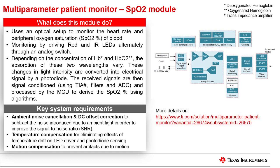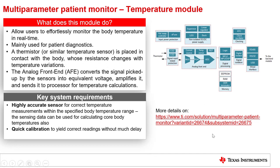A common block diagram for such SpO2 modules is shown in this slide. The third module is the temperature module. This module allows users to effortlessly monitor the body temperature in real time. It is mainly used for patient diagnostics. A thermistor, or similar temperature sensor, is placed in contact with the body, whose resistance changes with temperature variations. The analog front end, or AFE, converts the signal picked up by the sensors into equivalent voltage, amplifies the signal, and sends it to the processor for temperature calculations.